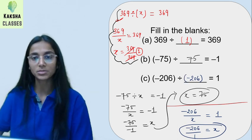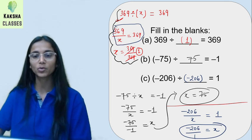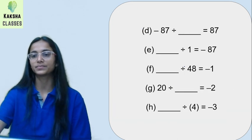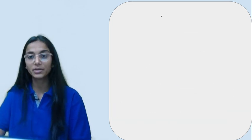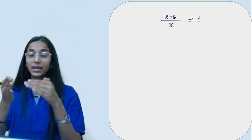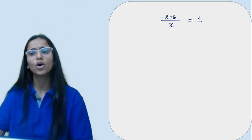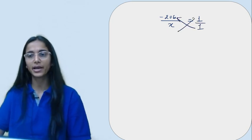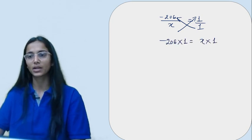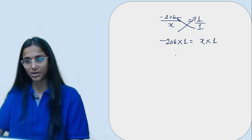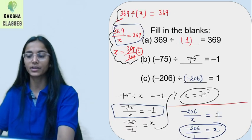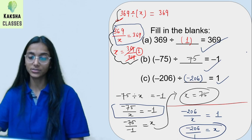Now, one more thing — how did I cross multiply in these three places? I will explain it. You always remember: suppose minus 206 divided by x equals to 1. I wrote 1 upon 1, then cross multiplied — so minus 206 times 1. This is a simple method for solving. I am very sure these three questions are done for us.